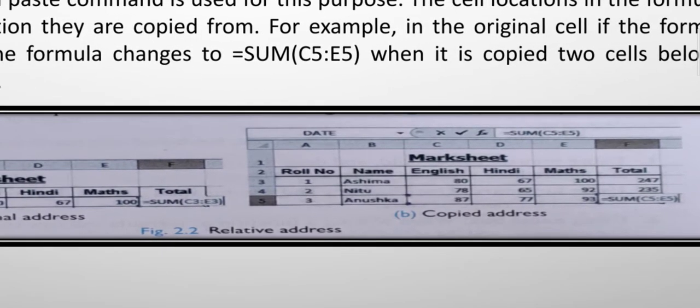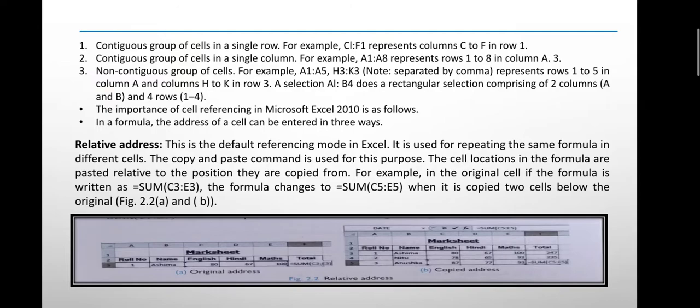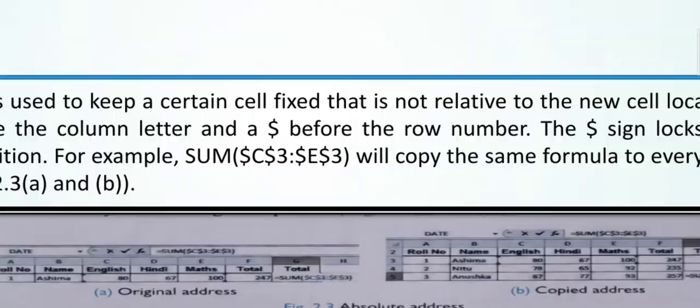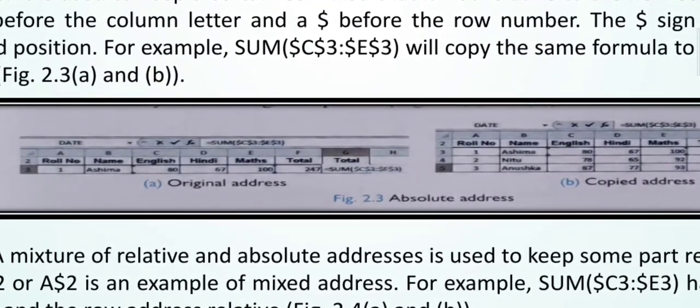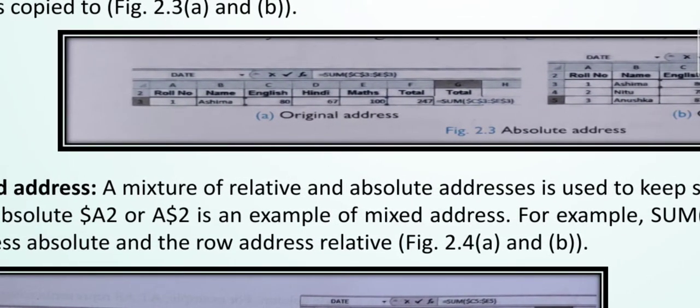Absolute address: It is used to keep a certain cell fixed so it is not relative to the new cell location. For this, insert a dollar sign before the column letter and a dollar sign before the row number. The dollar sign locks the cell location to fix the position.